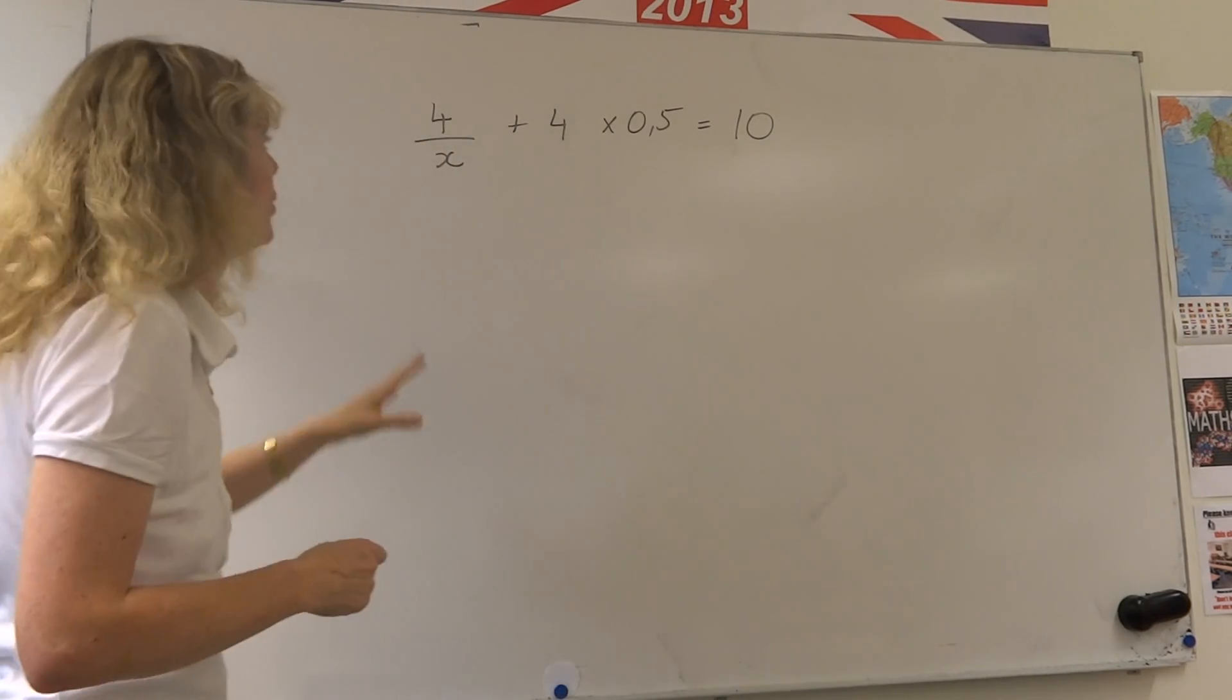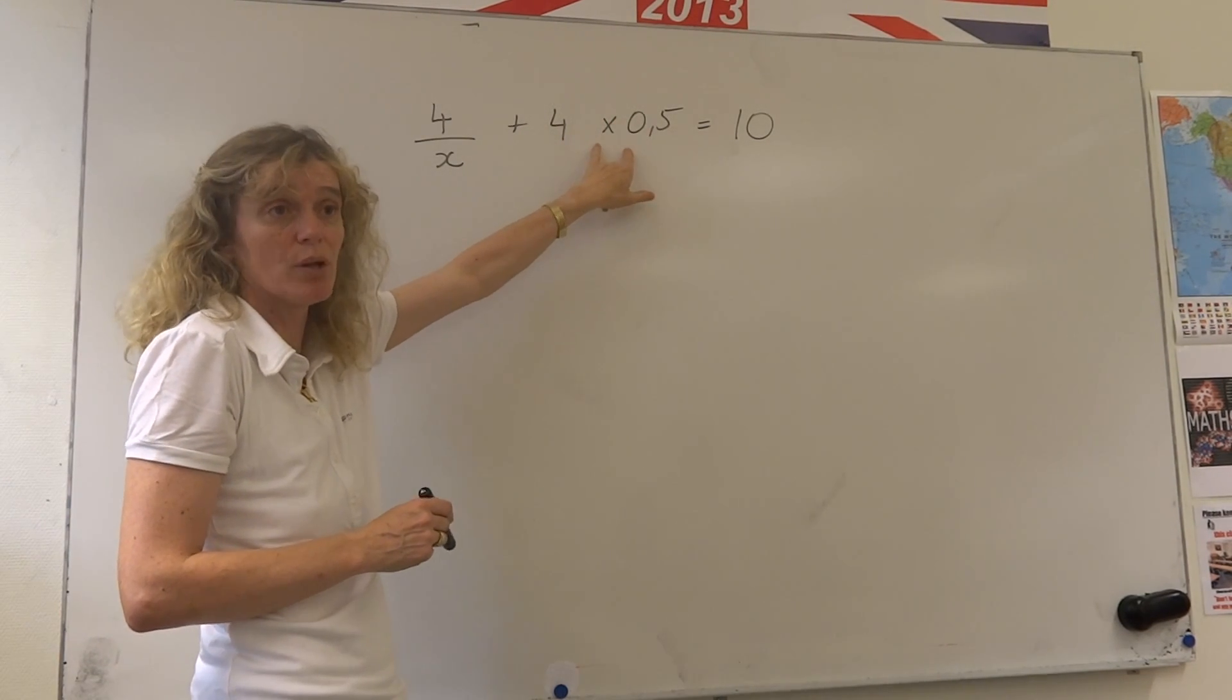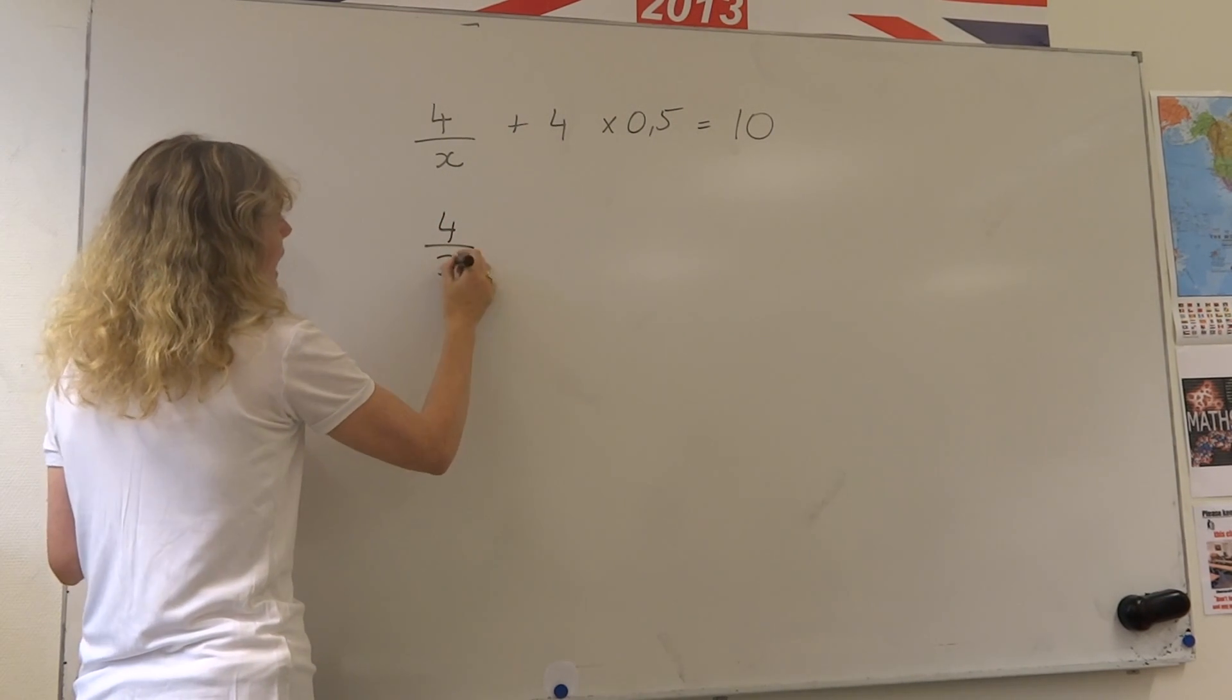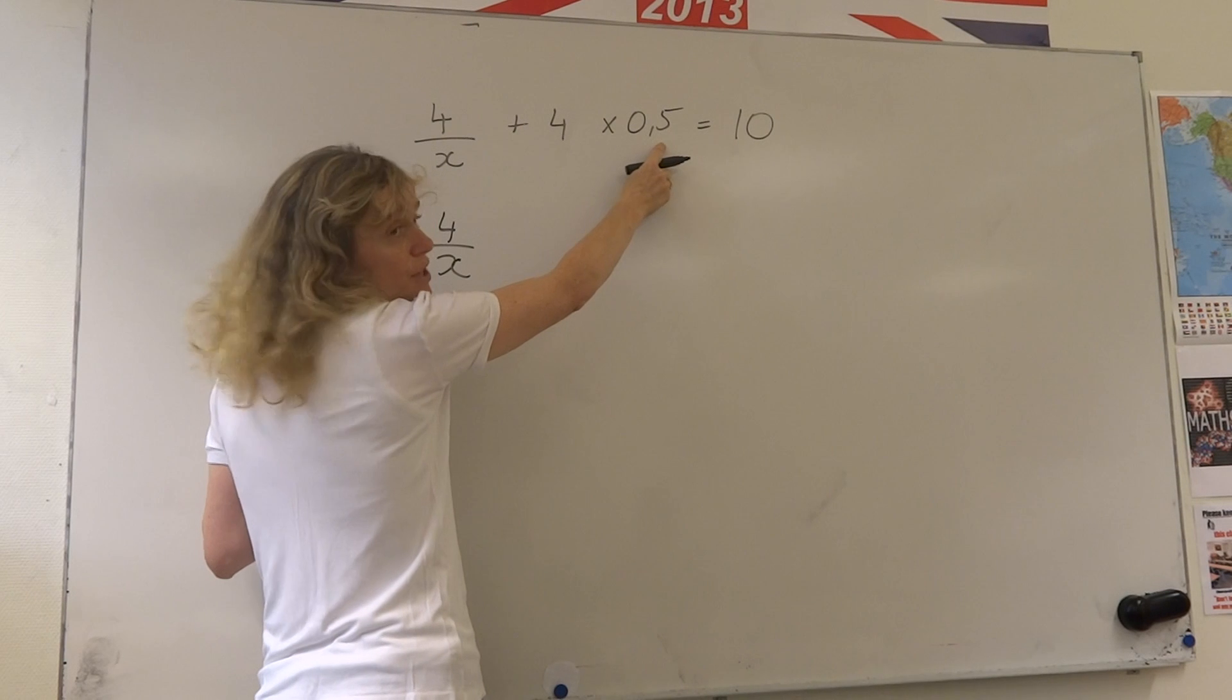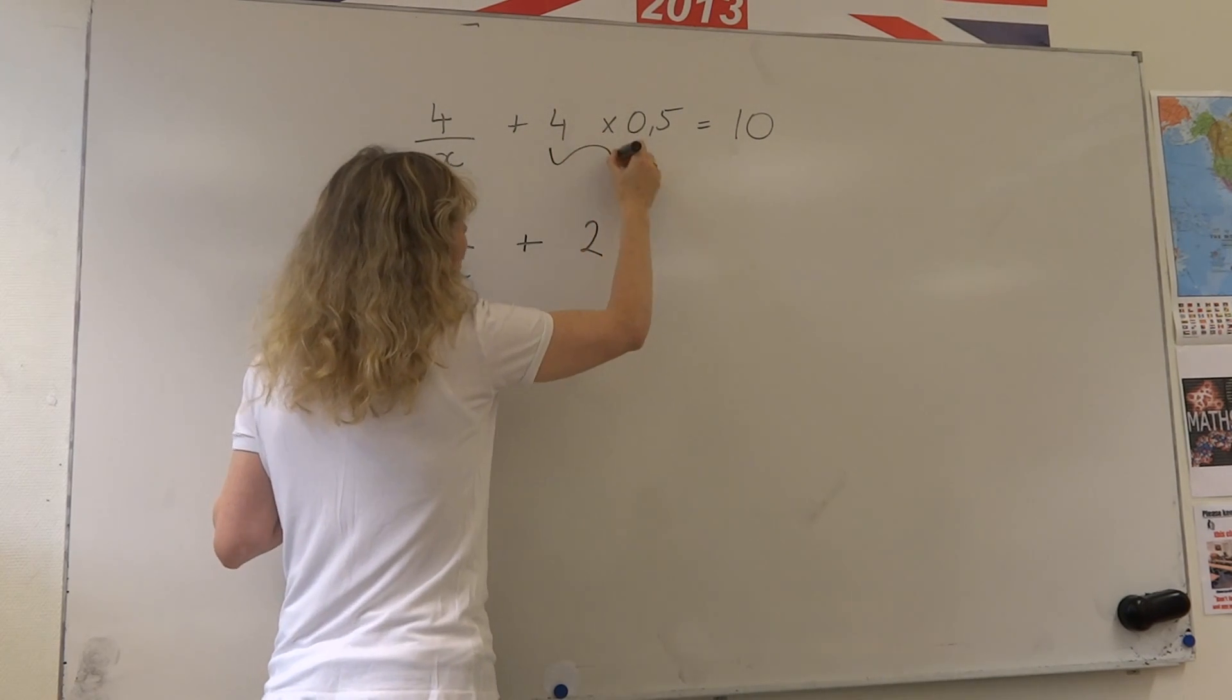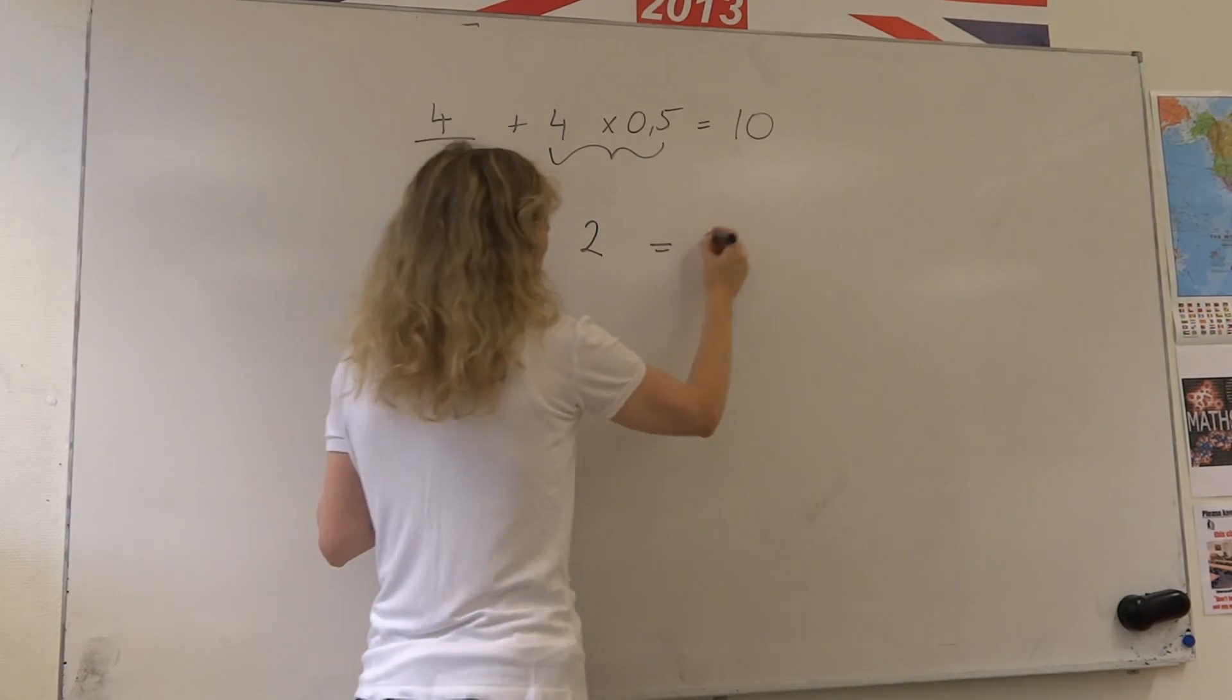The first thing we should do is just get all the numbers to the other side. And we know that before we're allowed to add or subtract, we need to do multiply. So let's write it just as we have it here. 4 divided by x. 4 times a half is plus 2. So this gives us, this part here is the first bit we work out. 4 divided by x plus 2 equals 10.